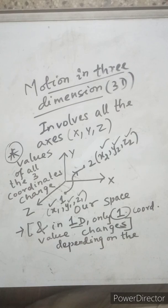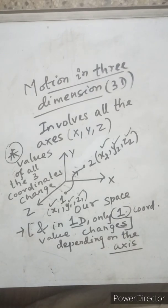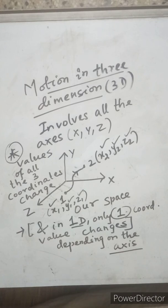In one-dimensional motion, only one coordinate value changes while the other two remain constant, since the object is moving along a single axis — either x, y, or z. That brings us to the end of today's discussion. Hope you have learned something, and you can bring your queries and doubts. Thank you.